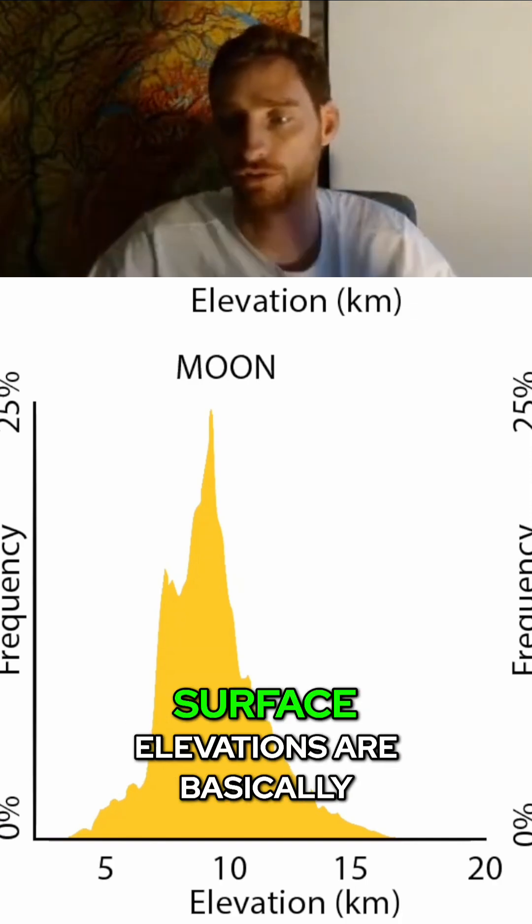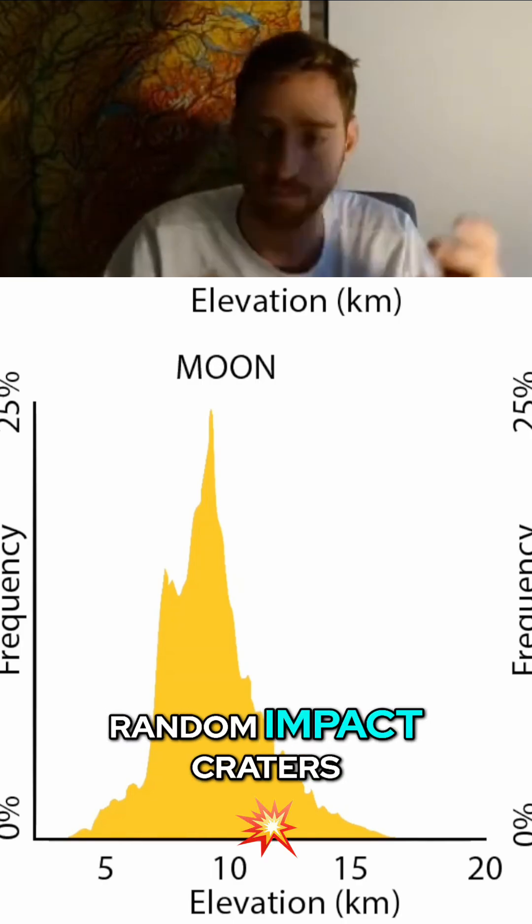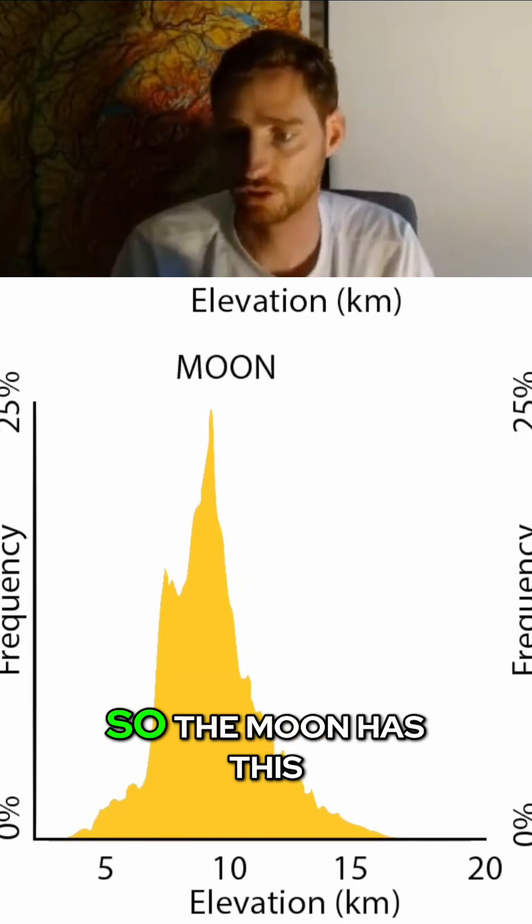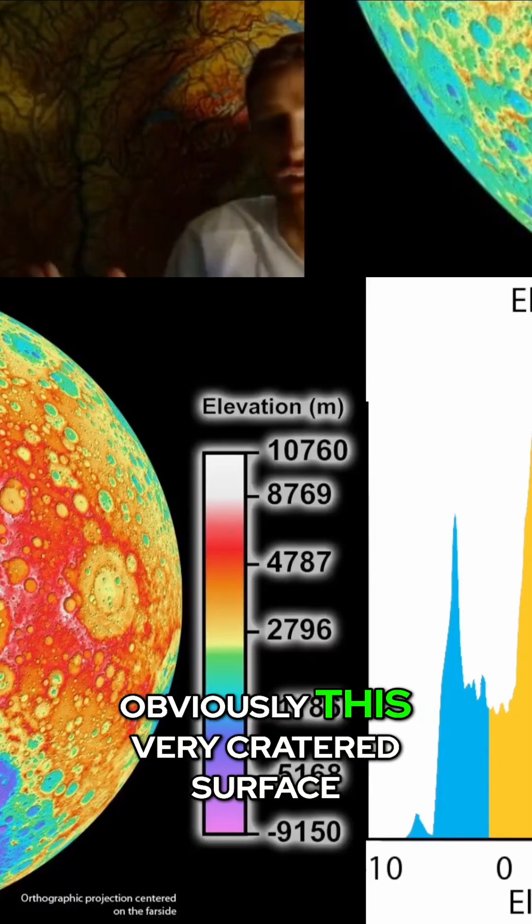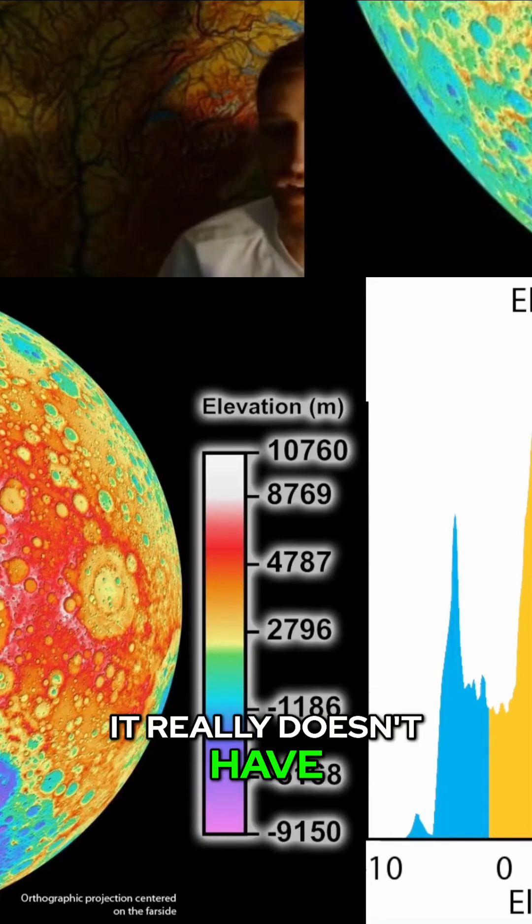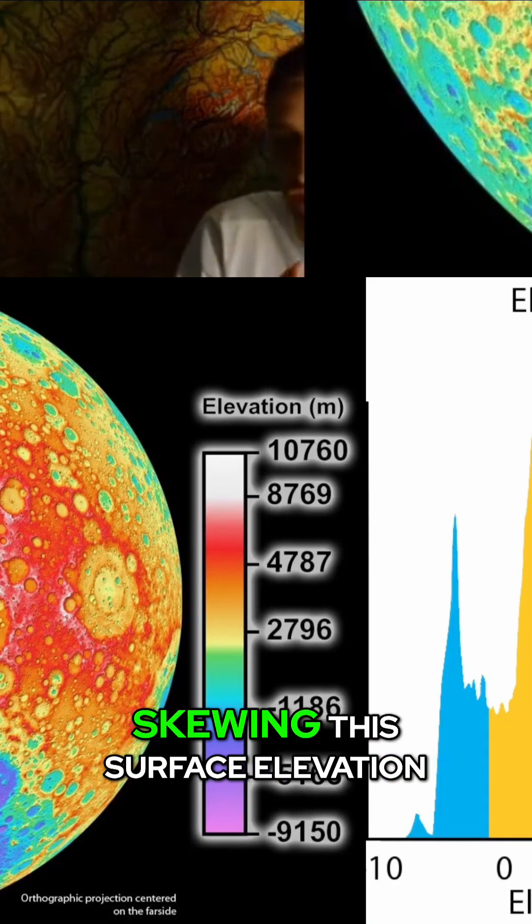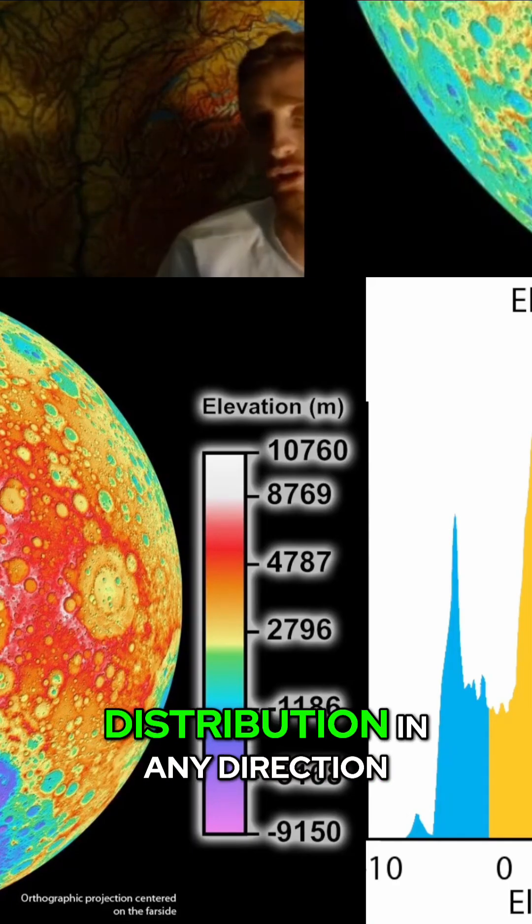And all the different surface elevations are basically generated by random impact craters. So the Moon has this obviously very cratered surface. And it really doesn't have much of a geologic process that is skewing this surface elevation distribution in any direction.